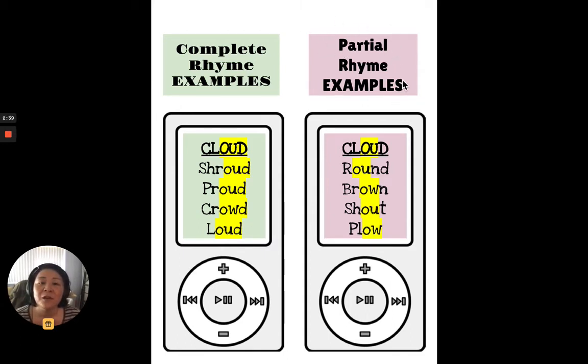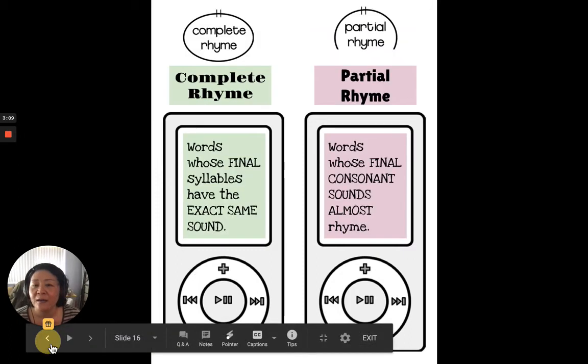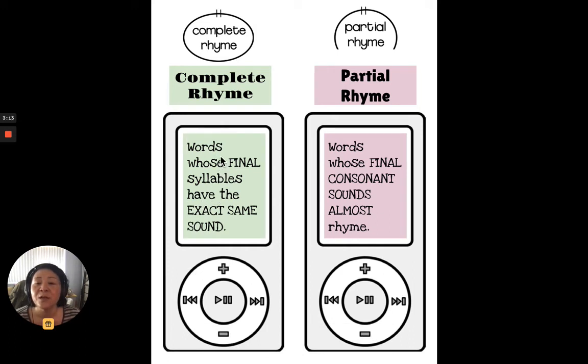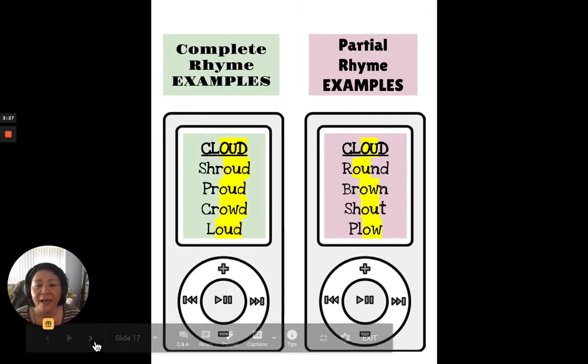So here are then some examples of partial rhymes. So we have the same word cloud, but now we're focusing on this owl sound. Round, and it doesn't have that D at the end. It's not the whole end, but it has this owl sound. Brown has that owl sound. Shout has that owl sound. And plow has that owl. So let's go back. Complete rhyme is words whose final syllables have the exact same sound, all the way to the end of the word. Now this, they almost rhyme, but they're not all the way to the end.